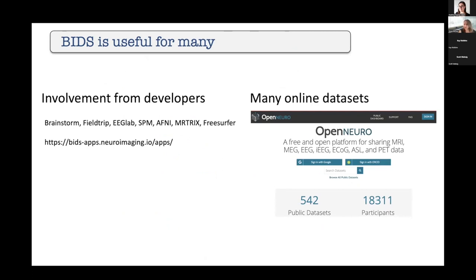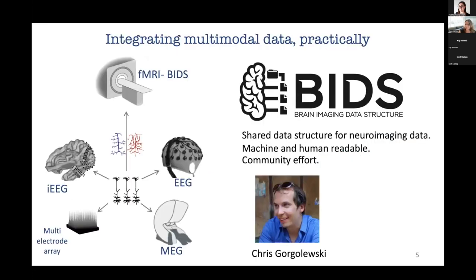There are many online datasets available, with OpenNeuro hosting already 542 datasets — this was about a month ago — with many different participants. So it's not just a niche for a very small group of people; it's actually a large group contributing to this. It's a community effort. Chris told me that the MEG community was already developing a BIDS extension.